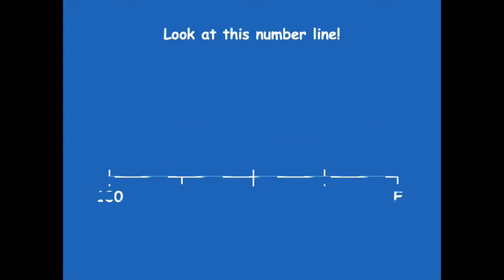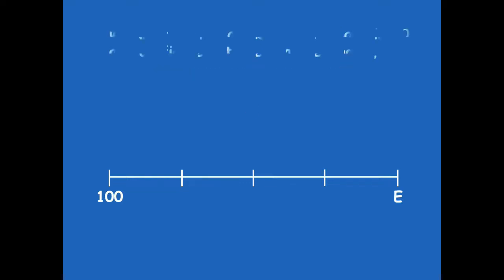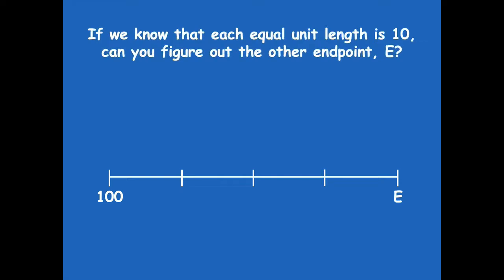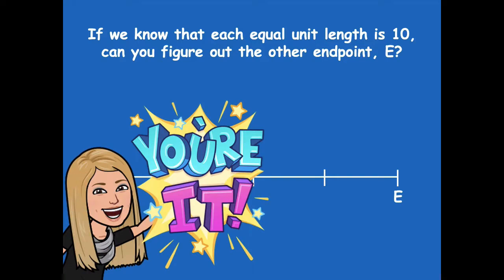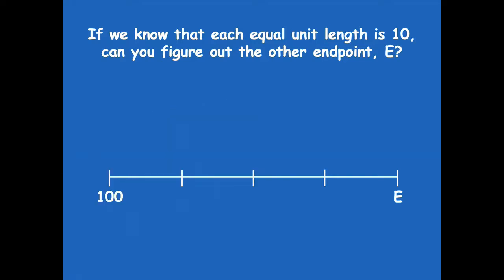Look at this number line — how many units, or parts, are there? Yeah, there are 4. If we know that each equal unit length is 10, can you figure out the other endpoint, E? We sure can, because we can count by 10s. Pause the video, count by units of 10 along each hash mark until you get to E, label what E should represent, and then click play when you're ready.